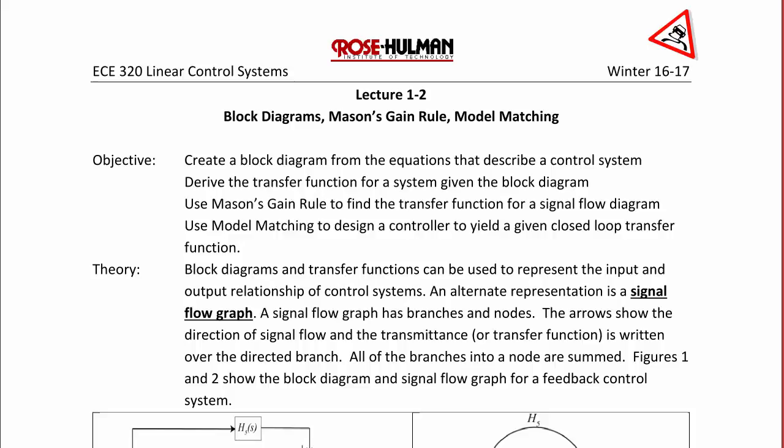The objectives of today's lecture are to create a block diagram from the equations that describe a control system, to derive the transfer function for a system given the block diagram, to use Mason's Gain Rule to find the transfer function for a signal flow diagram, and to use model matching to design a controller to yield a closed-loop transfer function.